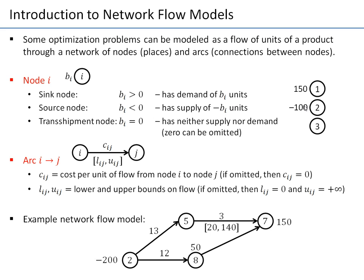To know the supply you cancel the minus, so this is a supply of 100 units. When the value is zero it means there is neither demand nor supply, and often when there are zeros we omit them — assuming zeros do not have to be written — which reduces clutter. In this case the node is a transshipment node.